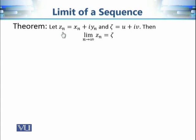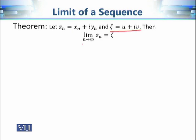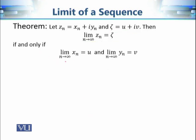Our main result is the following. If z_n = x_n + i·y_n is a sequence of complex numbers, where x_n and y_n are real sequences, and zeta = u + iv is a complex number, then the limit of z_n equals zeta if and only if the limit of x_n equals u (the real part of zeta) and the limit of y_n equals v (the imaginary part of zeta).